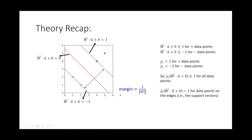If you are unsure about this expression for the margin, you can leave a comment and I will make a separate video to show you how to derive it. For all the positive data points, w dot u plus b should be greater than or equal to one — basically referring to this region. For the negative points, w dot u plus b should be less than or equal to minus one.